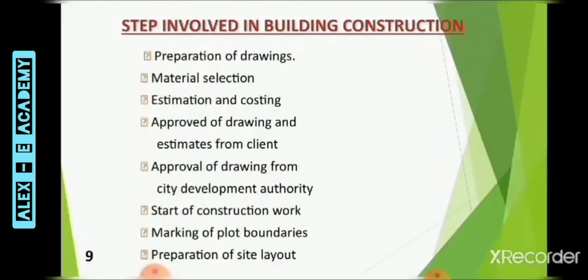The next slide covers steps involved in building construction. The first step is preparation of drawings or plans. The next is selection of suitable and cost-effective materials. Next step is cost analysis and estimation. After that, we present the plan to the client and check whether it needs modification. After modification, we approach the building control department of the local authority for sanction of the building plan. Then only we start construction, and mix boundaries and site layout preparation are carried out.